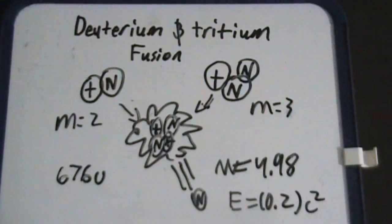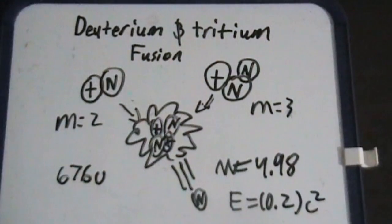So that's what deuterium and tritium fusion is. It is the fusion of two light nuclei of hydrogen atoms to form a helium atom, which shoots out a neutron. And this is really good.